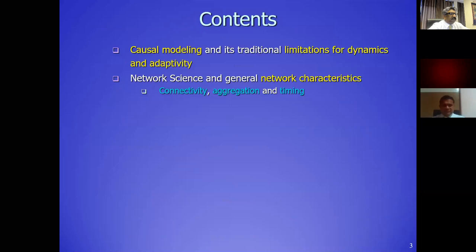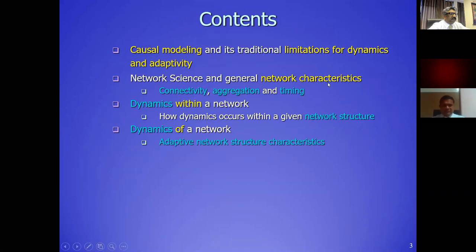This is the overview of the talk. I will discuss causal modeling in its traditional appearance and its limitations, especially for dynamics and adaptivity. Then I will discuss ideas from network science that have generated new elements in the spectrum, including characteristics of networks useful for modeling dynamic and adaptive networks.